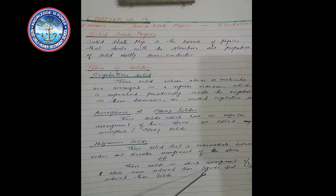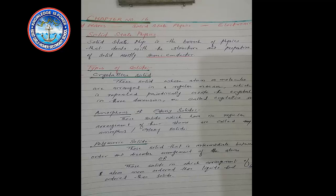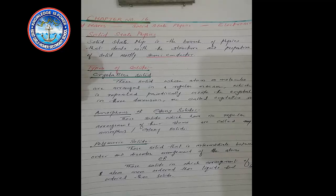...more ordered than liquid but less ordered than solid. We can say the arrangement of atoms in polymeric solids is in the middle — between solid form and liquid form — in terms of atom arrangement. This is the polymeric solid.